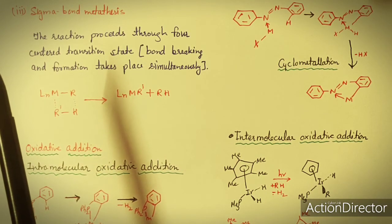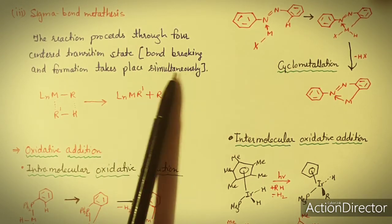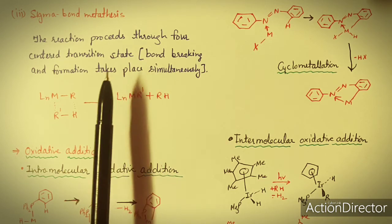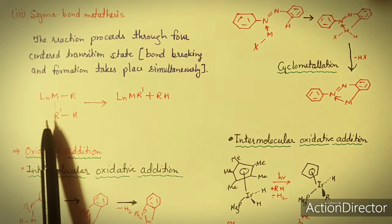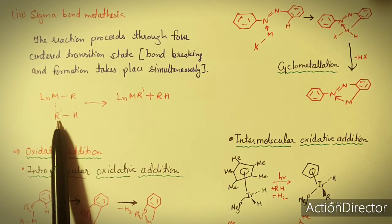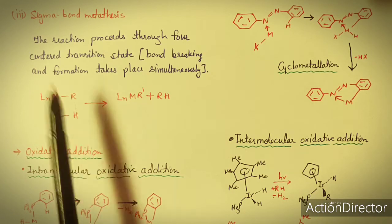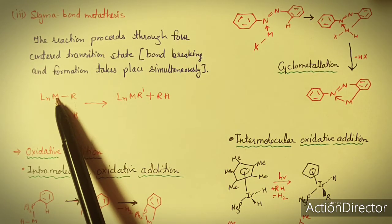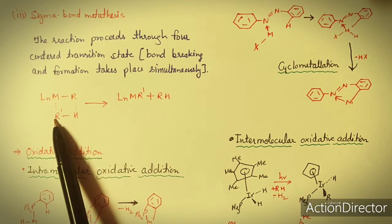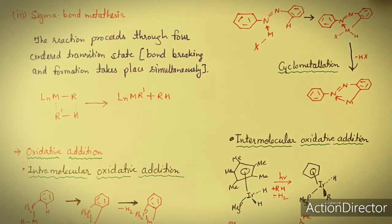The third main mechanism is sigma bond metathesis. In sigma bond metathesis, the reaction proceeds through a four-center transition state where bond breaking and bond formation take place simultaneously — the bond shifts. A compound R'H containing the C-H bond reacts with a metal complex so that R' attaches to M and H attaches to R, forming new products. In this way the C-H bond in R'H is activated through sigma bond metathesis.